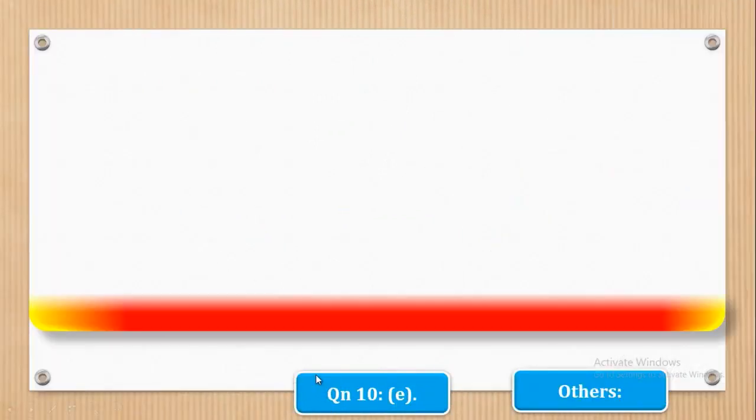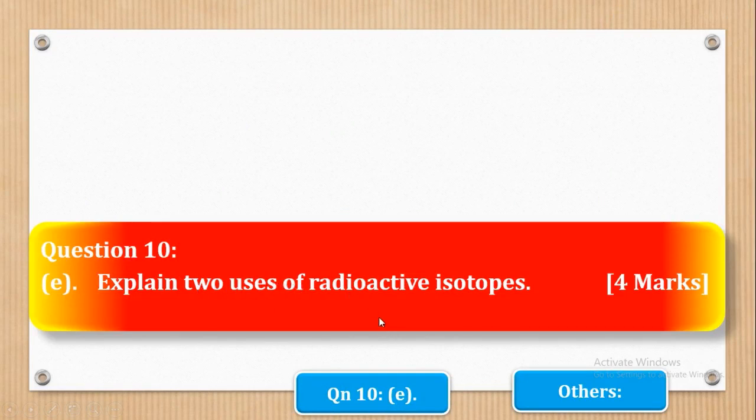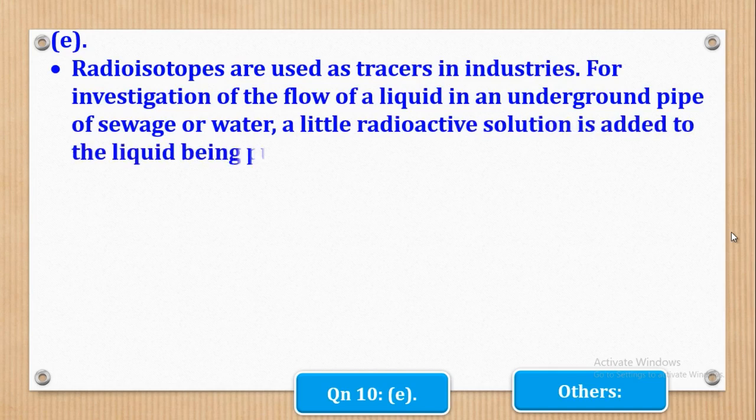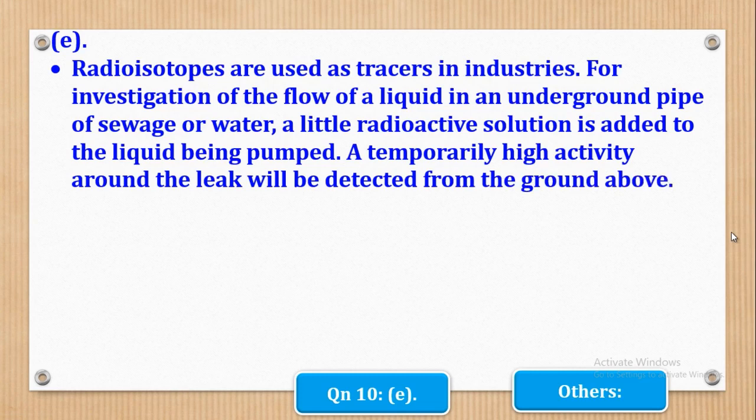So now we shall go to part E. Part E says explain two uses of radioactive isotopes. Remember they have told us to explain. So one we shall say that radio isotopes are used as tracers in industries. The explanation is that for investigation of flow of a liquid in an underground pipe or sewage or water, a little radioactive solution is added to the liquid being pumped. A temporarily high activity around the leak will be detected from the ground above.